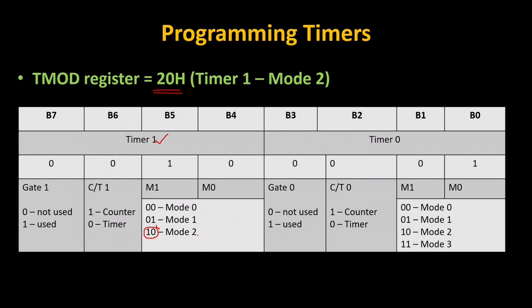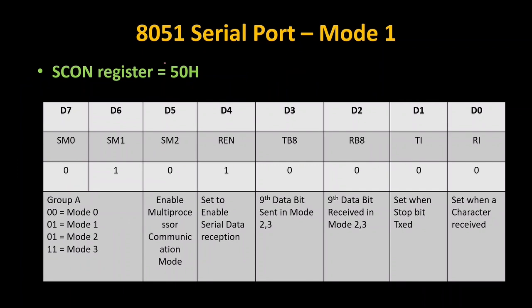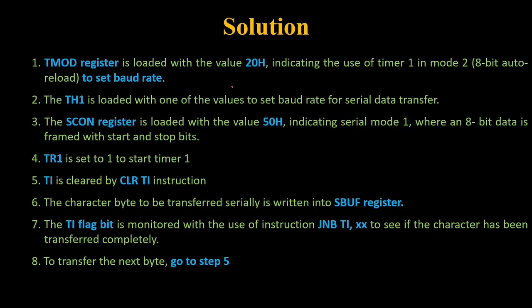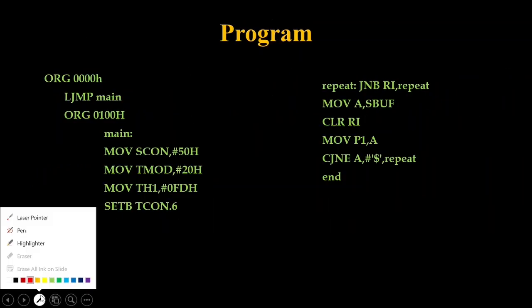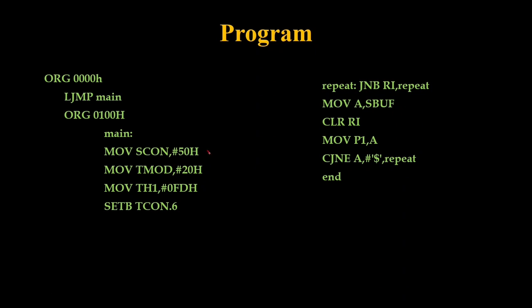For the SCON register, since we are going to receive data in Mode 1, Mode 1 is selected and the receive enable bit should be 1. So the value of the SCON register should be 50H. The SCON register gets 50H, the TMOD register gets 20H, and TH1 gets the value FD to fix the baud rate at 9600. The TR1 bit in the TCON register is set to start the timer.